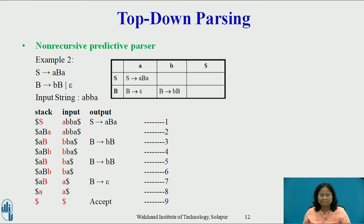Consider the second example: S → ABA, B → BB | ε, with input string ABBA. A predictive parsing table for this grammar is shown in the figure. Initially, the parser is in the configuration with ABBA$ in the input buffer and start symbol S on top of the stack above $, as shown in step 1. The input pointer points to input symbol A, so output the production S → ABA as shown in step 1. Push ABA onto the stack as shown in step 2. The top terminal symbol A matches with input symbol A, so pop A from the stack and delete input symbol A from the input buffer as shown in step 3.